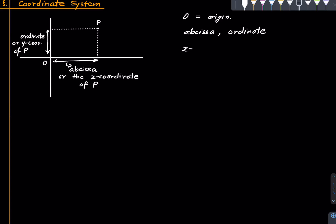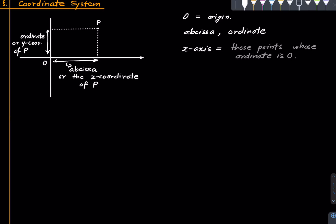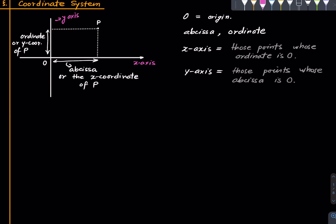The x-axis consists of those points whose ordinate is zero — basically those points where this perpendicular distance is zero, all the points lying on this axis or this line. This is called the x-axis. Similarly, the y-axis consists of those points where the abscissa is zero. So I'm sure you have seen these notions prior to this particular lecture. Let's proceed.